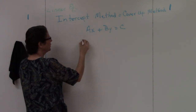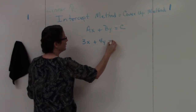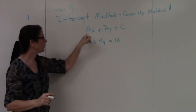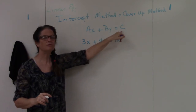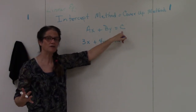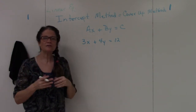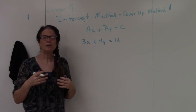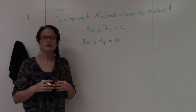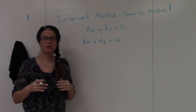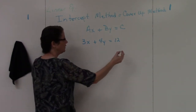If I have the equation 3x plus 4y equals 12, the 3 represents your a, the 4 represents your b, and the 12 represents your c — the constant with no variable next to it. This is called the intercept method because with any line, all you need are two points, and the two points we're going to find are the x-intercept and the y-intercept.